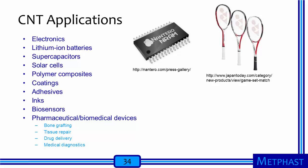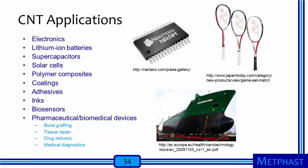Carbon nanotubes have been used in coatings such as antifouling coatings on the hulls of ships to prevent marine organisms from latching on. They can be used in inks and biosensors due to their ability to detect a broad range of biological molecules. Pharmaceutical and biomedical devices are another potential application, including bone grafting, tissue repair, drug delivery, and diagnostics. However, applications in actual products are being rolled out slowly, mainly because of the challenges in producing carbon nanotubes in large quantities with enough purity in a reliable fashion.